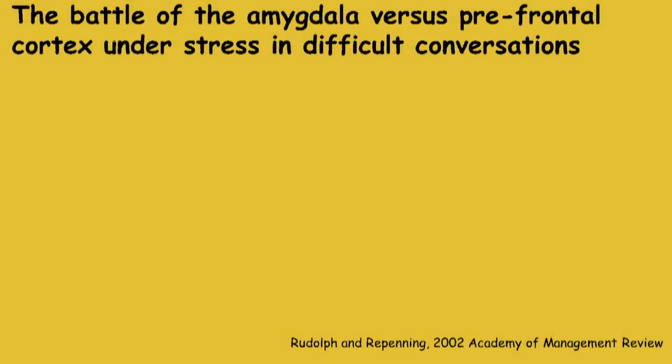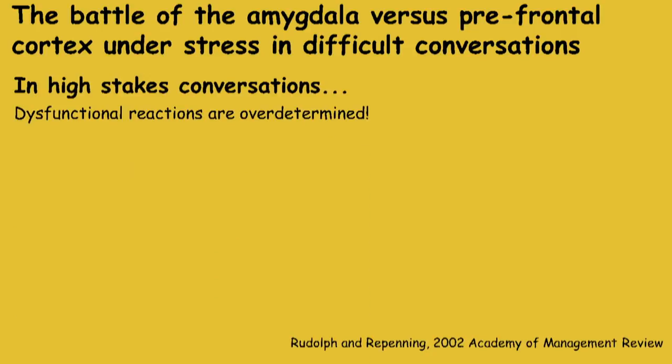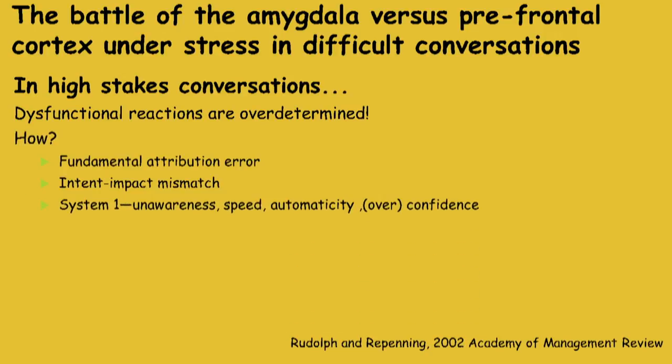The real issue here is we've got a battle of the amygdala versus the prefrontal cortex under stress and difficult conversations. Dysfunctional reactions are over-determined — there's almost nothing you can do about it. Why does this happen? Basic principles of social psychology like the fundamental attribution error, intent-impact mismatch, system one. We just diverge into unawareness, speed, automaticity, overconfidence.